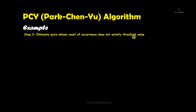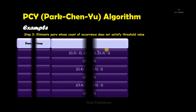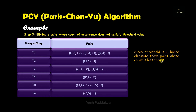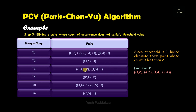In step 3, we eliminate those pairs whose count of occurrence does not satisfy the minimum threshold criteria. Since the minimum threshold value is 2, pairs with an occurrence count less than 2 will be eliminated. For example, pair (1,2) has count 2 — it satisfies the condition and is taken as a final pair. Pair (2,3) has count 1 — it does not satisfy the condition so it is eliminated. After checking every single pair, the final pairs that satisfy the minimum threshold condition are (1,2), (4,5), (1,4) and (2,4).